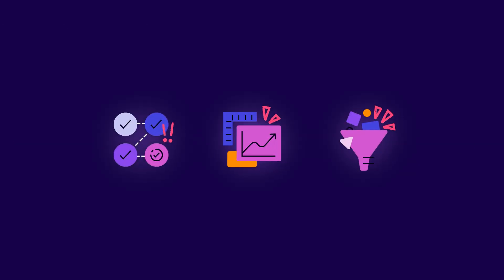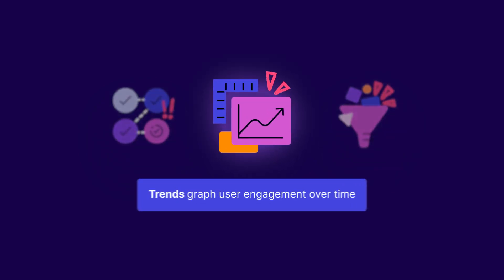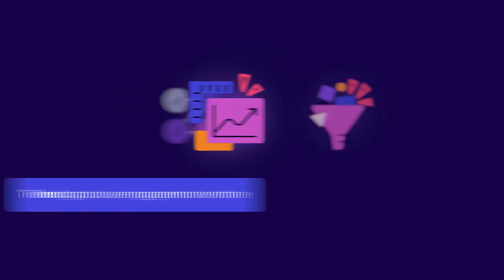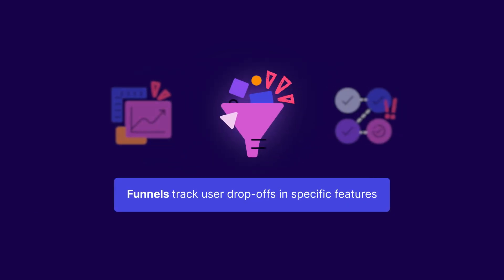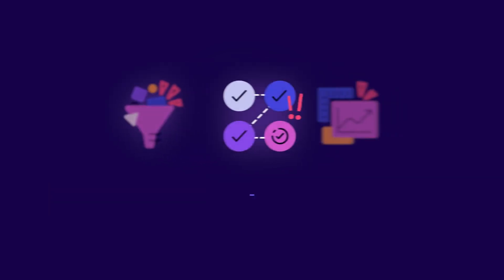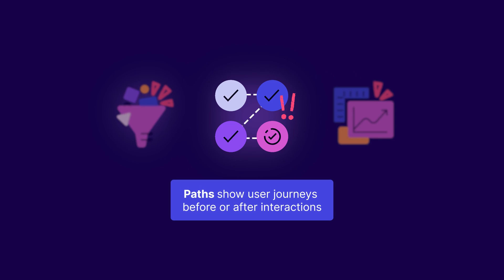Trends, funnels, and paths are popular approaches to grasp product usage patterns. Trends graph user engagement over time. Funnels track user drop-offs in specific features. And paths show user journeys before or after interactions.